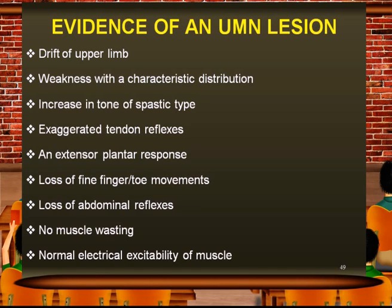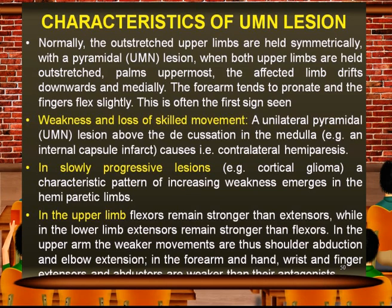Upper motor neuron lesion signs include increased tone of spastic type, exaggerated tendon reflexes, extensor plantar response, loss of fine finger and toe movements, and loss of abdominal reflexes. There is no muscular wasting per se in upper motor neuron lesions, but in the long term, disuse atrophy may cause some muscle wasting. There is normal electrical excitability of the muscles, which is not seen in lower motor neuron lesions.